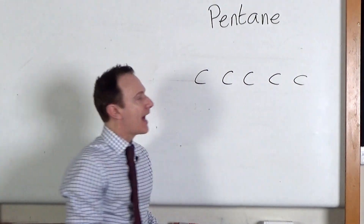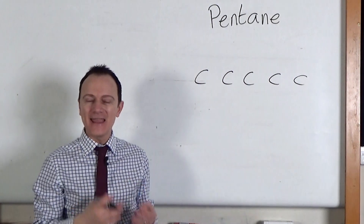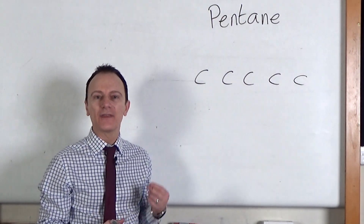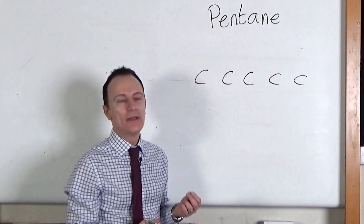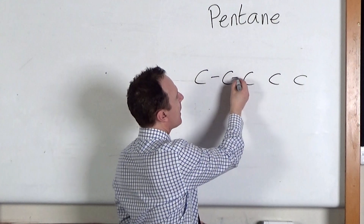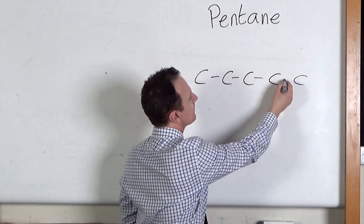Five carbon atoms, and it's an alkane — we know that because it ends in 'ane' — so it's got single bonds between the carbon atoms.